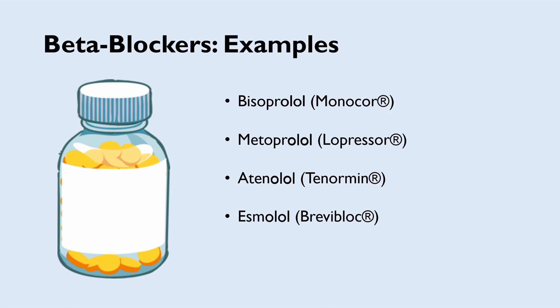Some examples of beta blockers include bisoprolol, metoprolol, atenolol, and esmolol. Notice how all the generic names of beta blockers end in '-olol'? Most medications within the same class tend to have the same suffix, so this is a useful trick that can help you recognize a beta blocker if you are ever prescribed one.